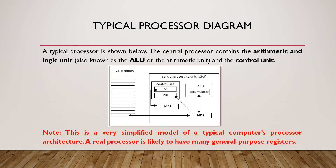A typical processor is shown below. The central processing unit contains the Arithmetic and Logic Unit, also known as the ALU, and the Control Unit. You can see that we have the ALU and the Control Unit, each of which have registers such as the PC, CIR, Accumulator, MAR, and MDR found in the processor. This is a very simplified model of a computer processor architecture.